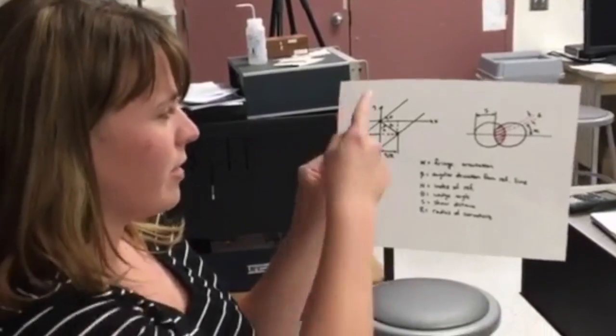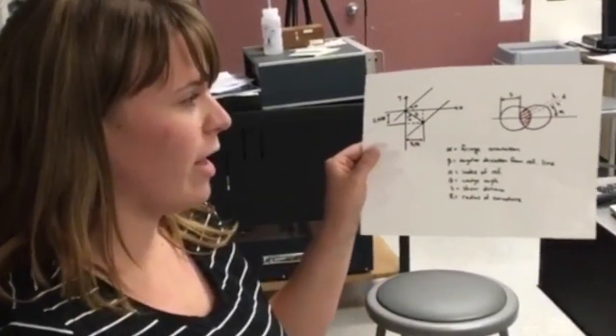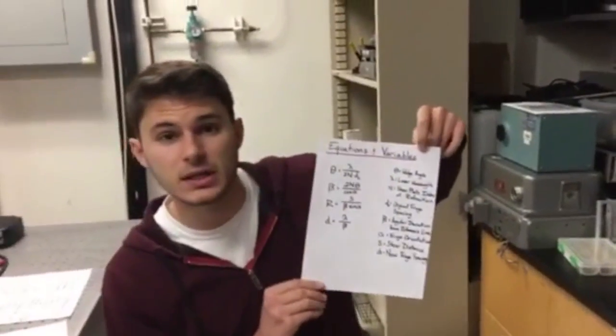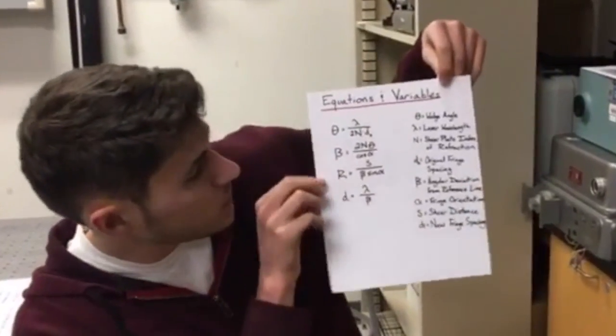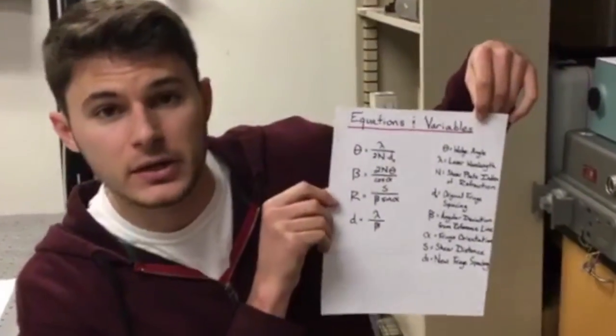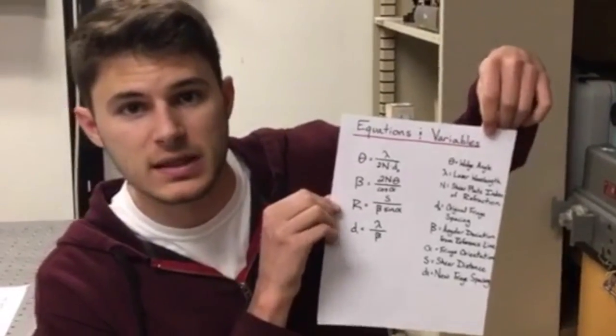We used all of these geometries of the shear plate and of the fringes to test the focal length of several optical elements. So I'm going to talk about our equations and our variables that we used in the calculation sections. These four equations are what we chiefly used for calculating the fringe spacing and other requirements that the lab asked for.